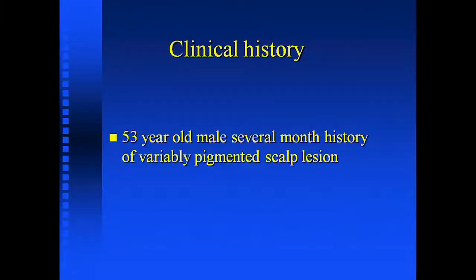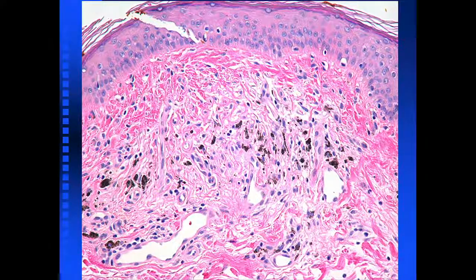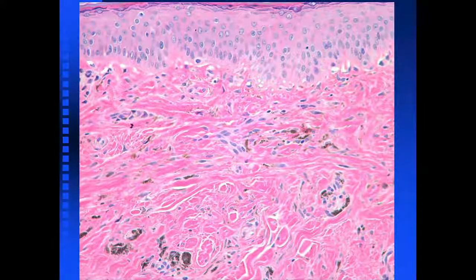Let me tell you about a case that really happened at Mount Sinai. We had a 53-year-old male with a several-month history of a variably pigmented skin lesion. The biopsy shows a row of melanophages, a little bit of coarse fibrosis in the dermis, and prominent vessels — not much at the dermal-epidermal junction. Another view shows this coarse collagen and variable pigments in the dermis.